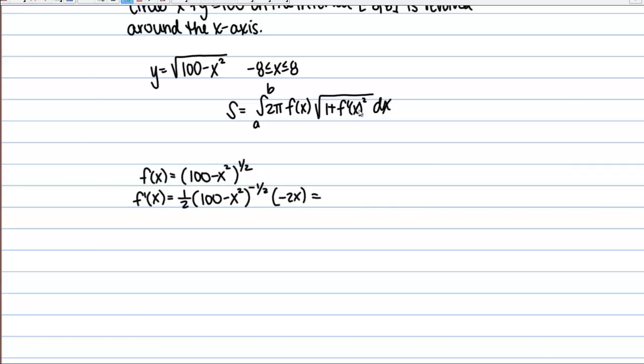So, if I simplify, that's going to give me negative X over the square root of 100 minus X squared. And let's go ahead and square that as well, since that's what we ultimately want.